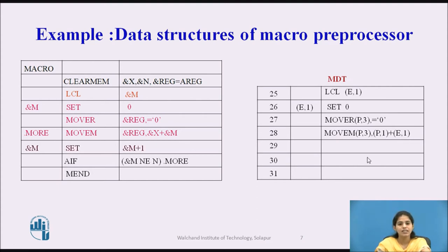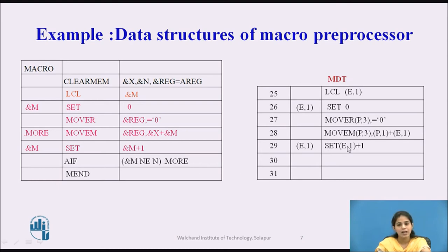For the statement &M SET &M + 1: we generate specification (E,1) for &M — E indicates expansion time variable, 1 is the entry number in EVN tab. We then specify SET, then again (E,1) for &M, followed by plus and 1.